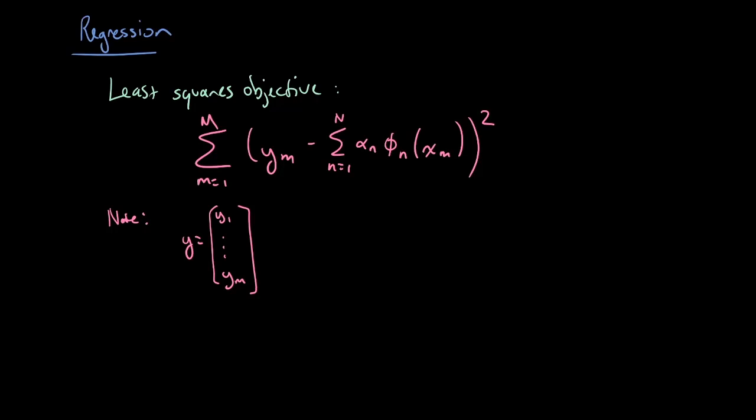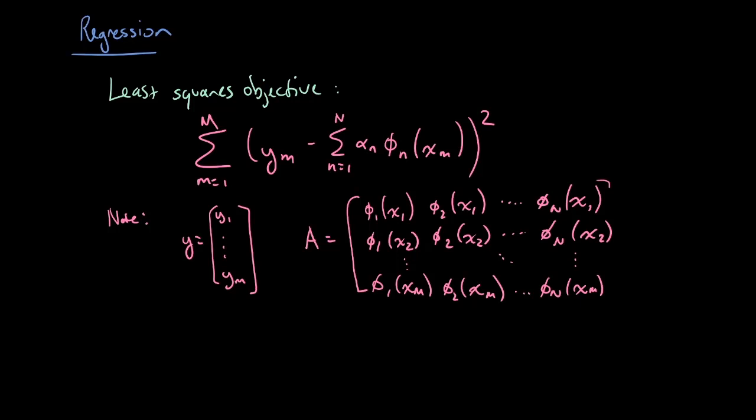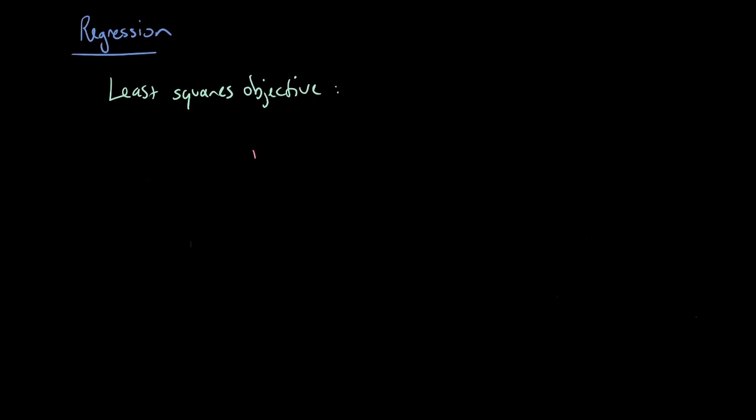What I'm going to describe is how you would estimate those alphas using least squares. Recall that the least squares objective we're going to minimize is the sum of the errors of ym minus the prediction at xm given by our function. We take those errors squared and add them all up. Note that we can write this in matrix notation by creating a vector of y's, a vector of alphas, and then filling out this matrix A which is given by the different functions phi 1 up to phi n evaluated at all our data points x1 up to xm. It's easy to check that you can equivalently write this expression as the Euclidean norm of y minus A times alpha squared, and this is exactly what we encountered before. The only difference is that now I'm using alpha instead of x to avoid confusion, since in the regression context we're using x to denote the locations of our samples on the x-axis.